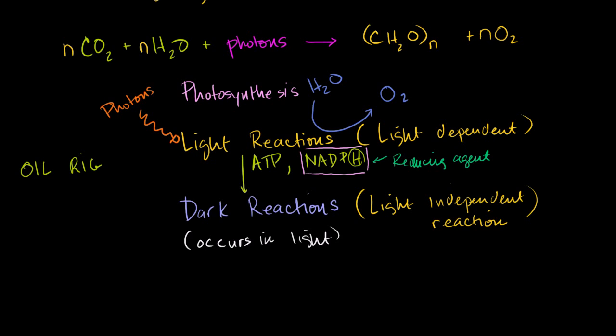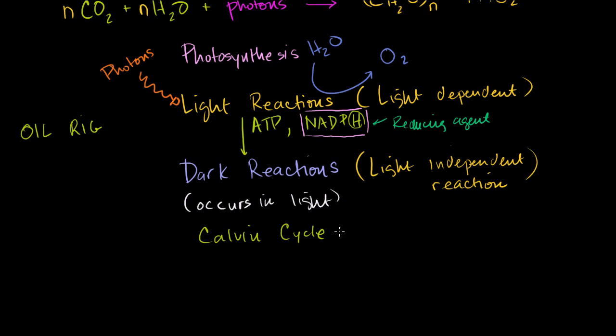And the dark reactions, for most plants we talk about, it's called the Calvin cycle. And I'll go into a lot more detail of what actually occurs in the Calvin cycle. But it takes in the ATP, the NADPH, and it produces, it doesn't directly produce glucose.